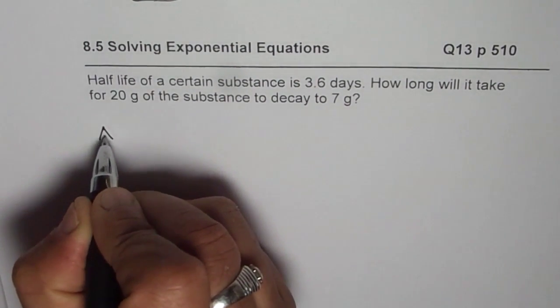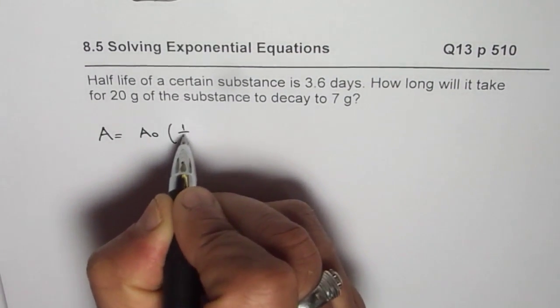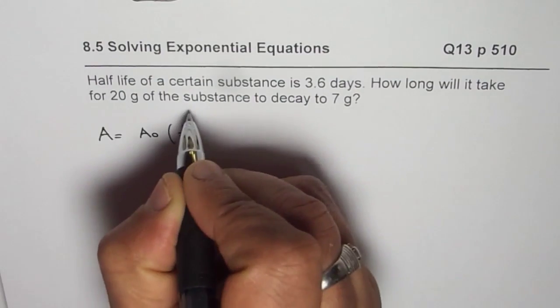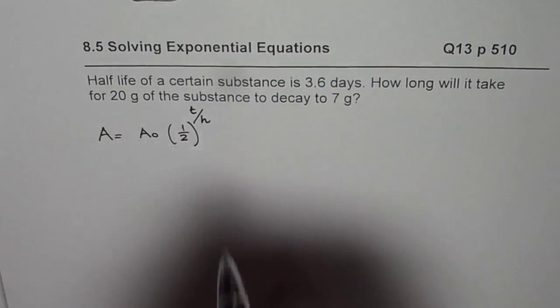we can say amount left equals initial amount times, since half life is given, we will use half to the power of t over half life, t over h. In this case,